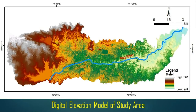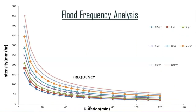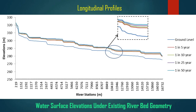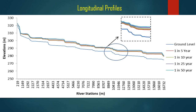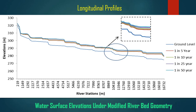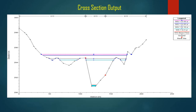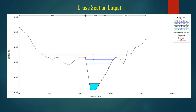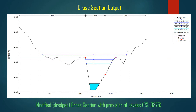The digital elevation model of the study area is illustrated on the screen. The flood frequency analysis of 35 years of rainfall data was carried out and IDF curves were generated. Simulations were carried out for different return periods of rainfall such as 1 in 5, 10, 25, and 50 years. The results were in the form of longitudinal water surface elevations and cross-section outputs. The screen depicts the cross-section output for the existing cross-section RS-10375, the existing cross-section with the provision of levees, and the modified or dredged cross-section with the provision of levees.